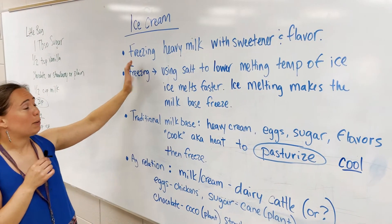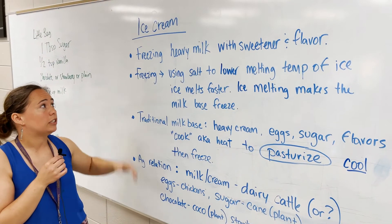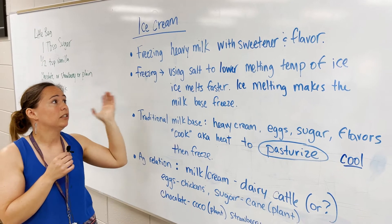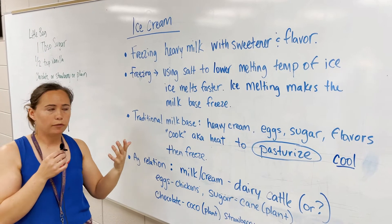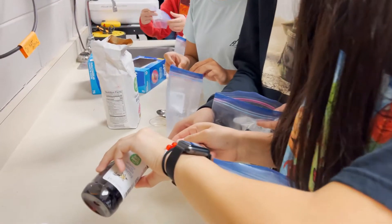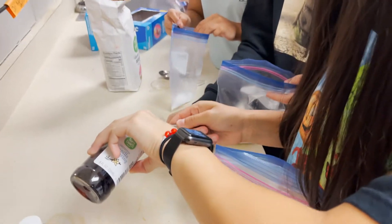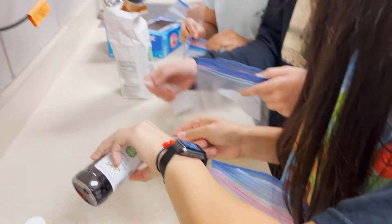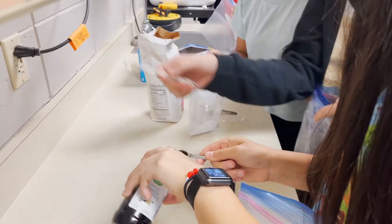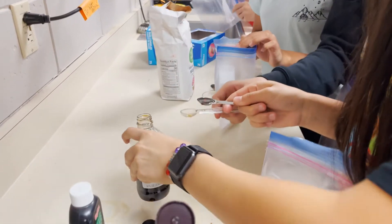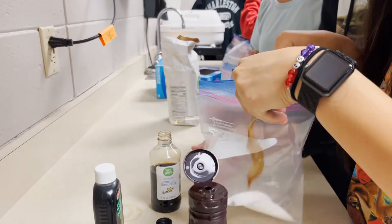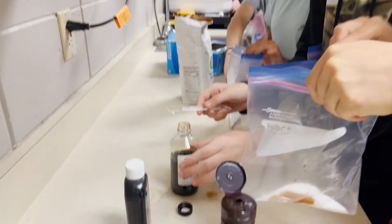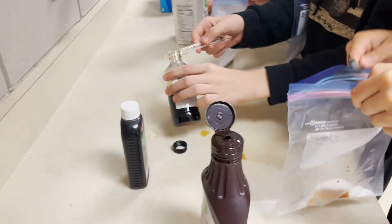So with the ice cream, basically all it is is freezing heavy milk or cream or some sort of a dairy product, adding sweetener and flavor to it. That's basically the process. It doesn't matter if it's really high-end ice cream or our ice cream in a bag — it's the same thing either way.